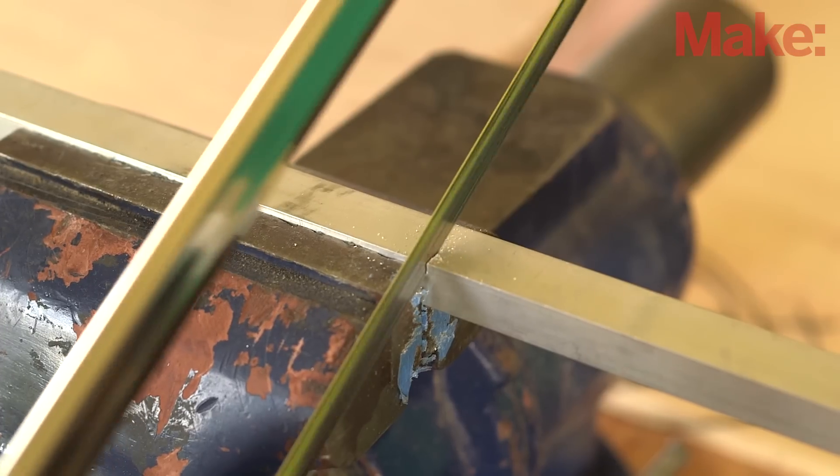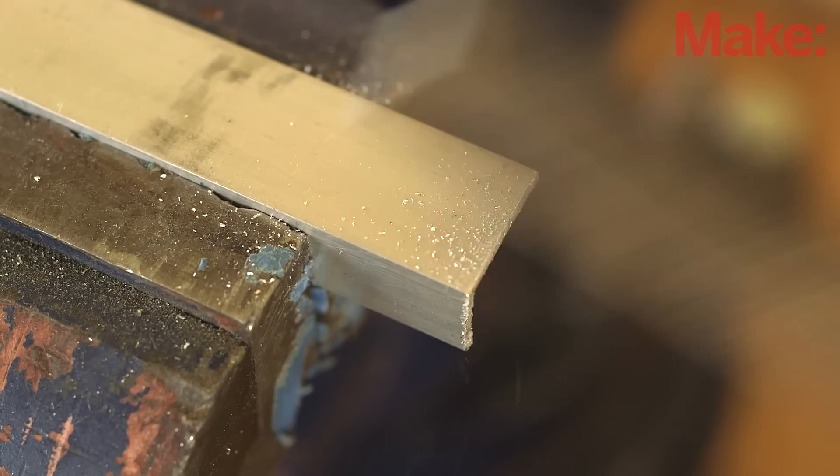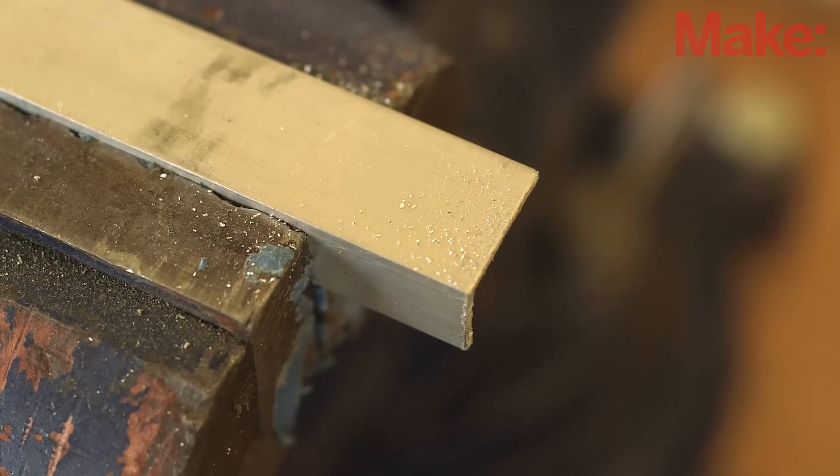Next, you'll use a hacksaw to cut your offset aluminum angle in half. Be sure to file any rough or sharp spots on the cut ends.